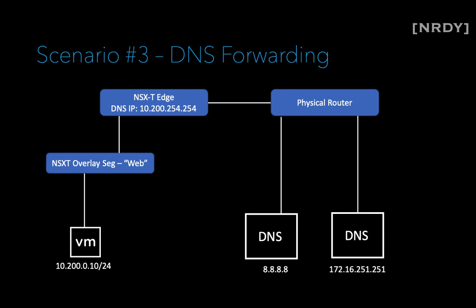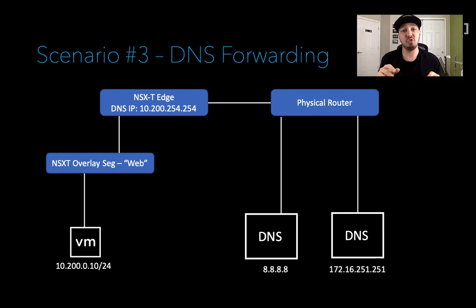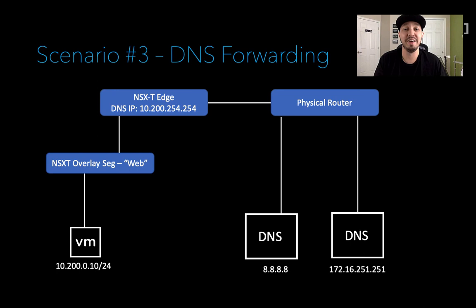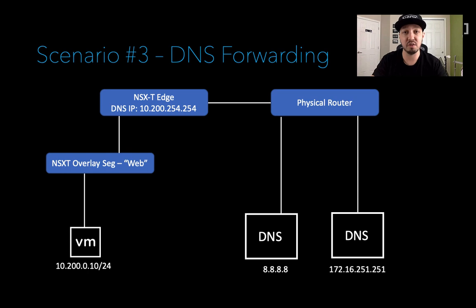So to summarize: scenarios one and two don't need anything special from a DNS standpoint. Scenario three — if you want to do conditional forwarding and split DNS requests to different places — NSX-T can do that, and it's called DNS forwarding. I'll drop a link to the documentation if you're interested in playing with it, and if there's interest, I'd be happy to do a video on that as well. Thank you for your time, I hope everyone's staying safe and healthy. Take care.